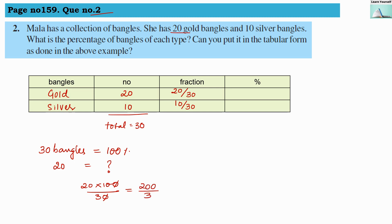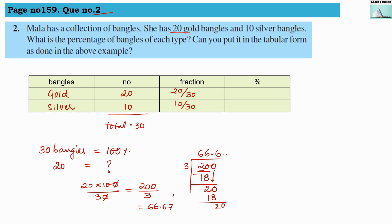We calculate 20 × 100 ÷ 30. The 10s cancel, giving 200 ÷ 3. Dividing: 3 into 20 gives 6 remainder 2, bring down 0, 3 into 20 again gives 6 remainder 2. We place a decimal point and continue — this repeats. So we round off to 66.67 percent for gold bangles. You can also write 66.666 percent.